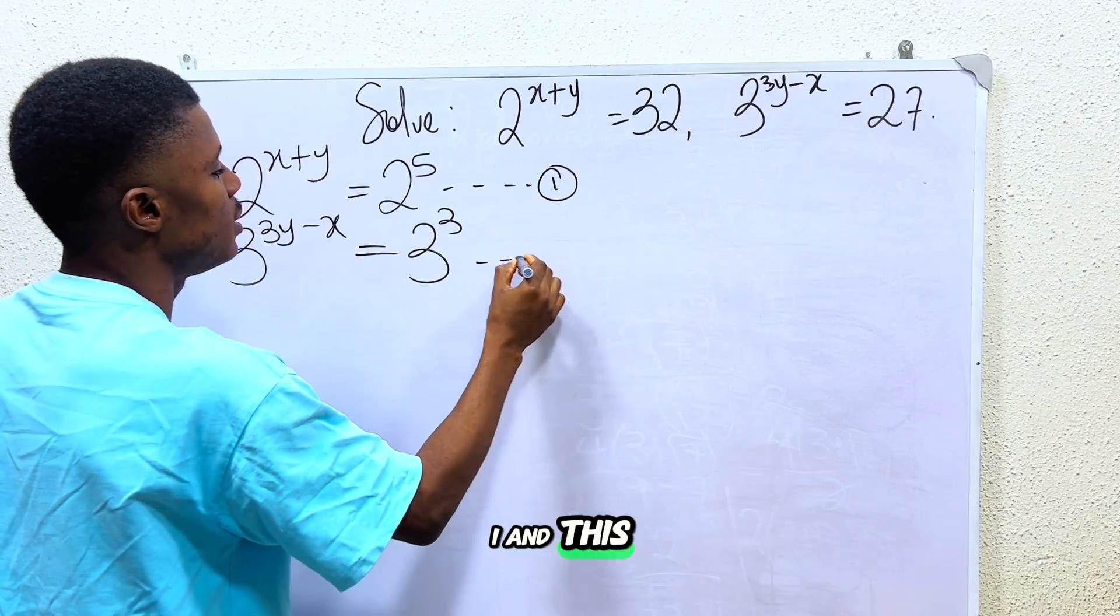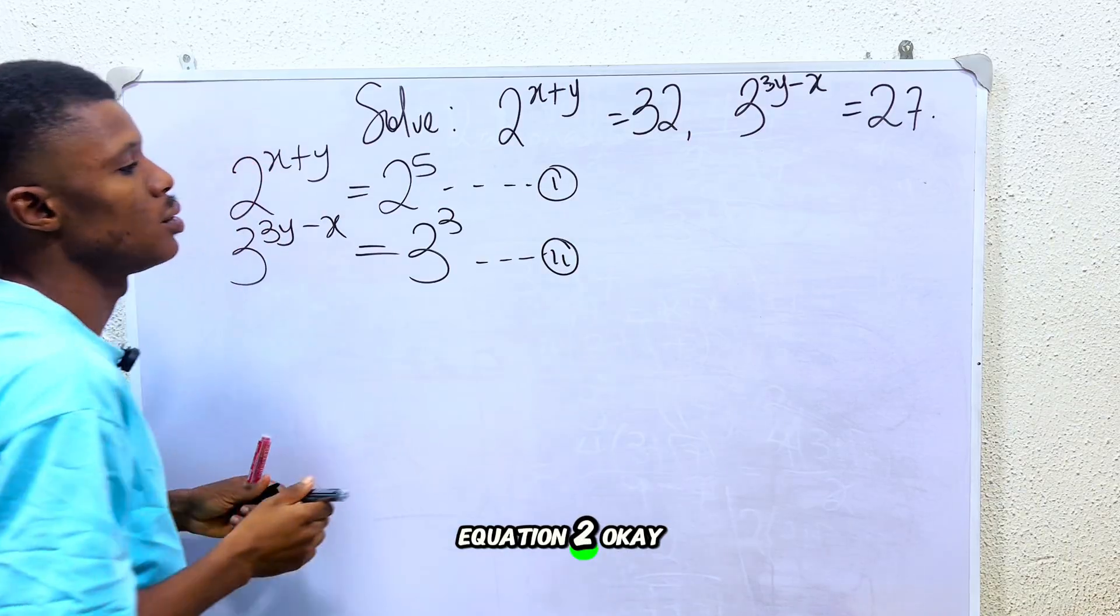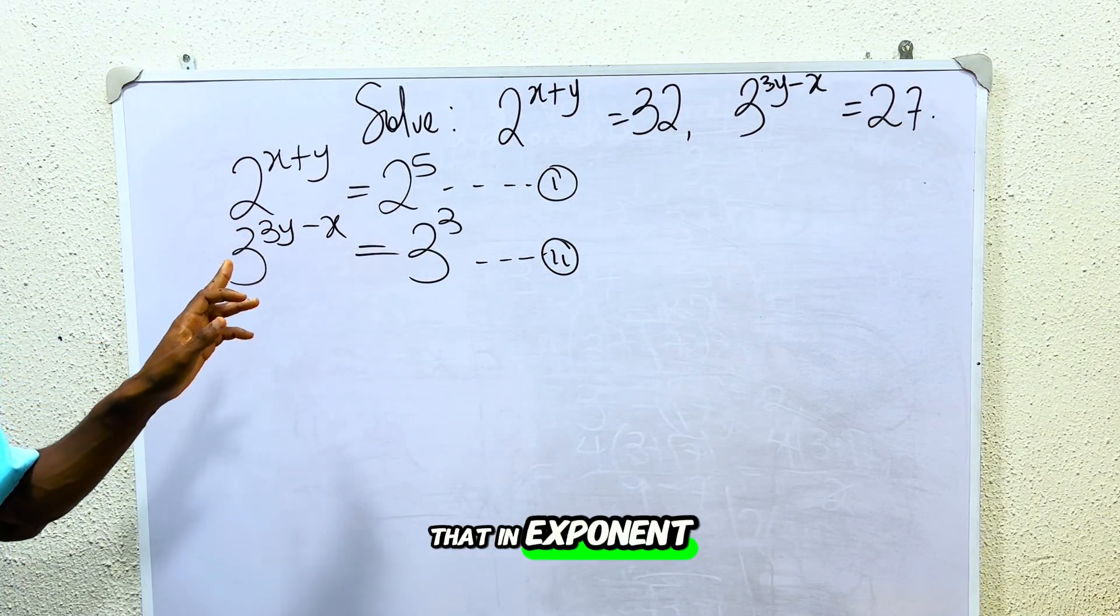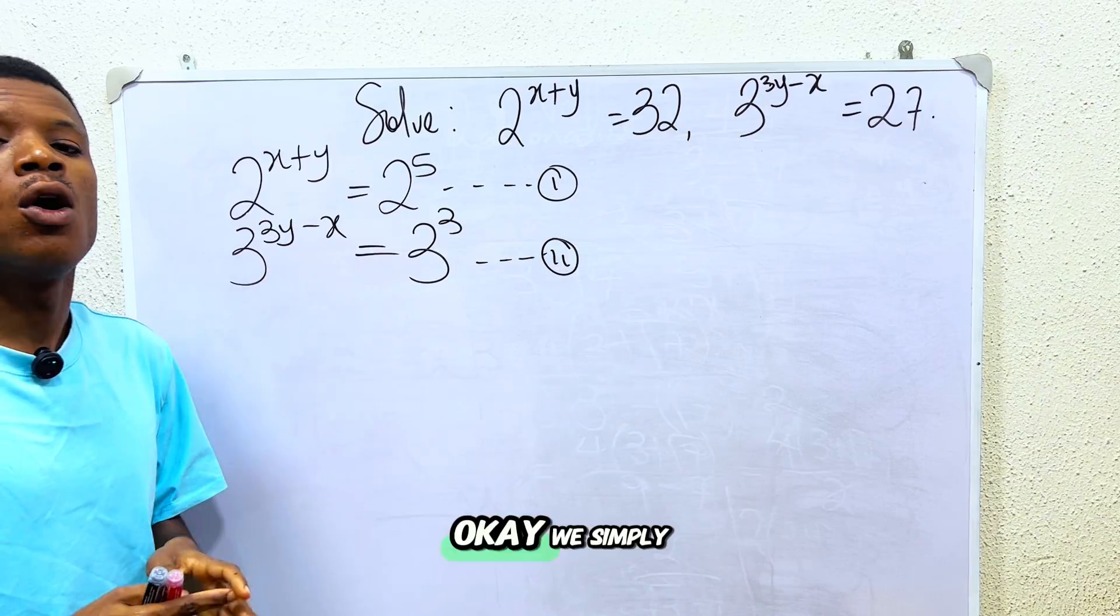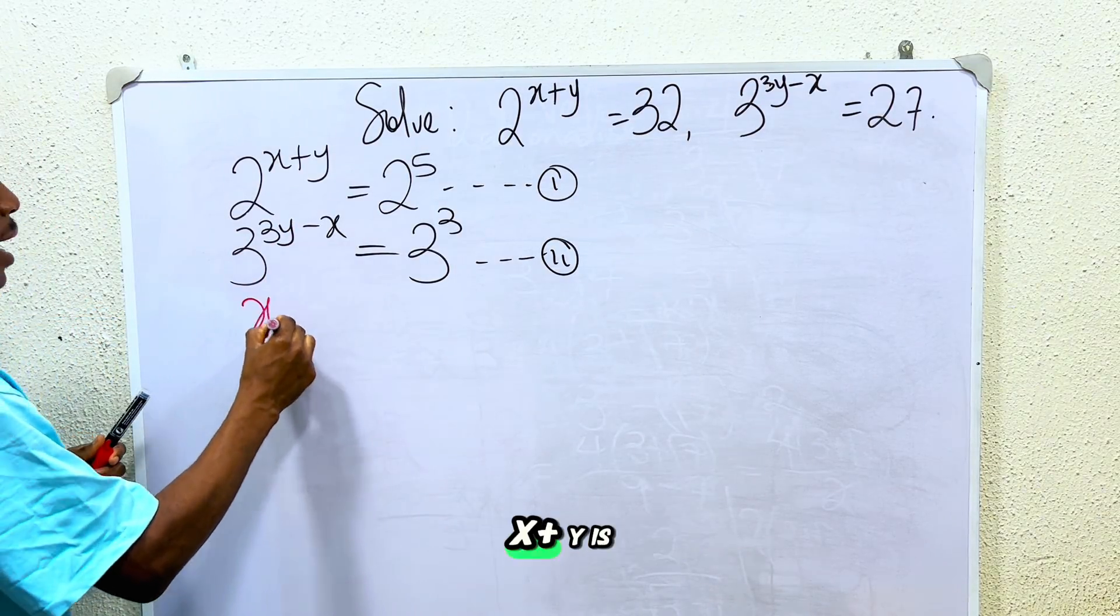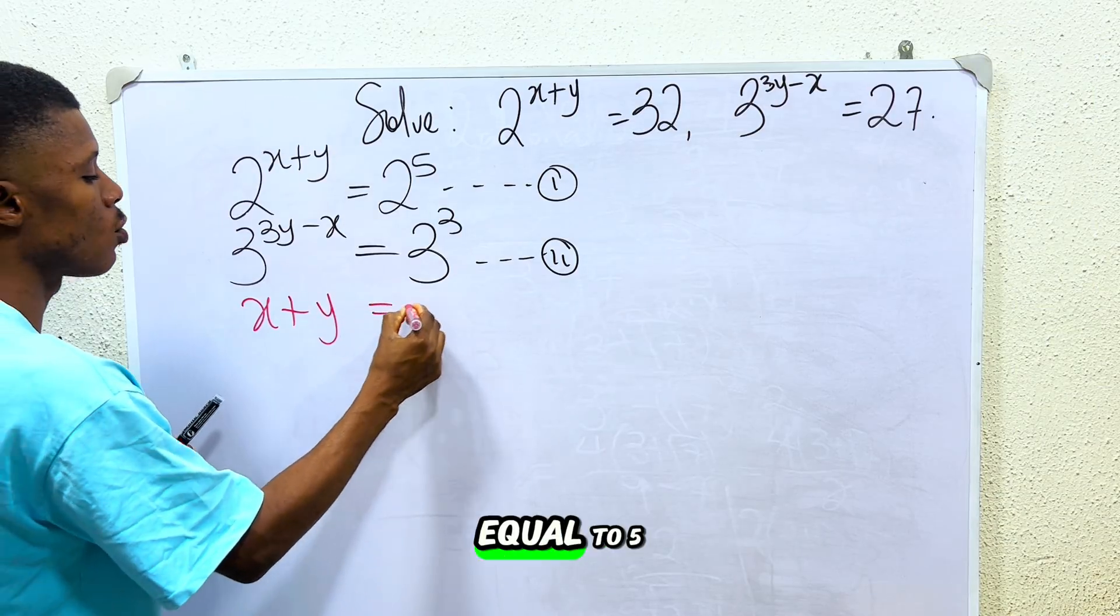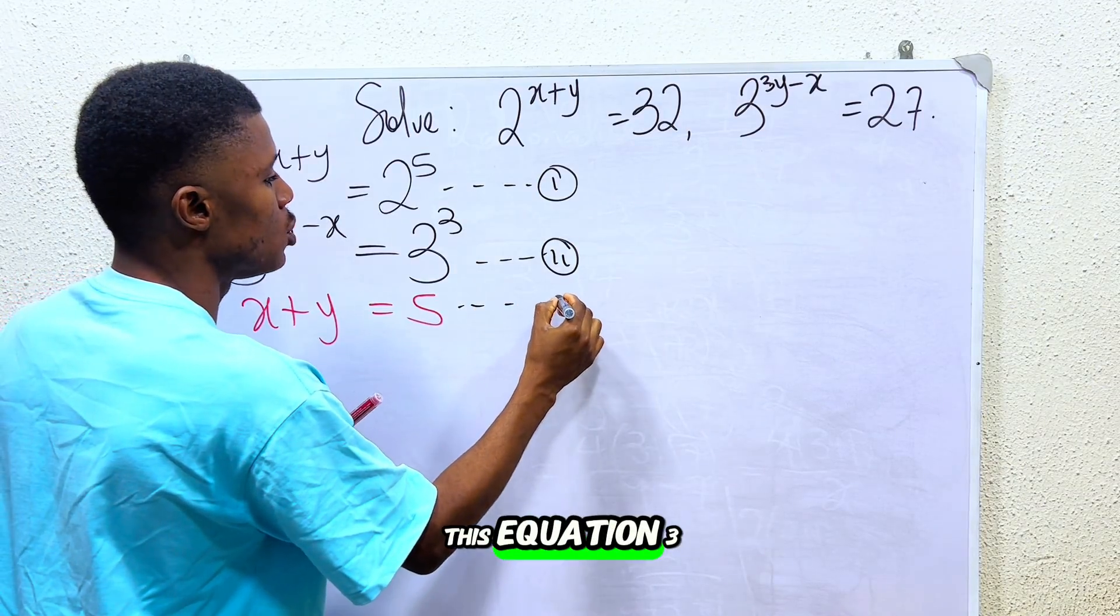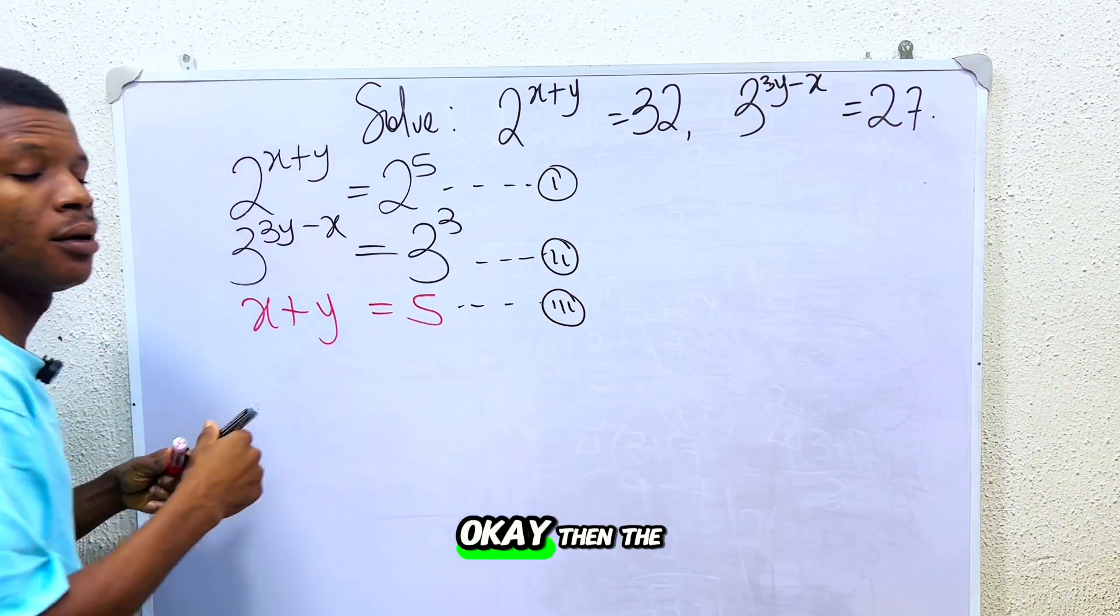Since I have this, this can actually be my equation 1 and this will be my equation 2. So the next thing I have to do is that in exponent, whenever we have the bases to be the same, we simply equate the powers. So I can easily say that x plus y is equal to 5. We can call this equation 3.